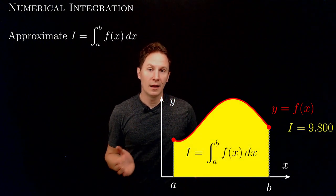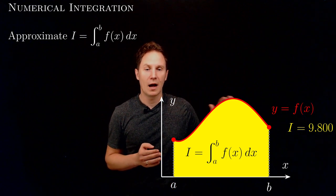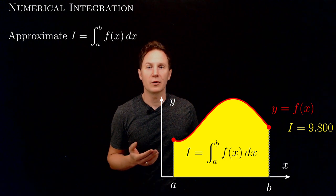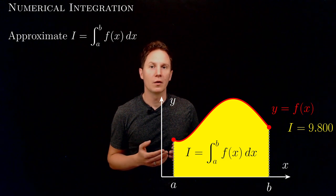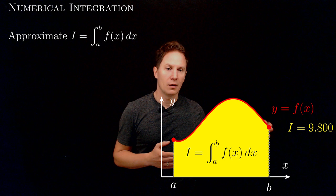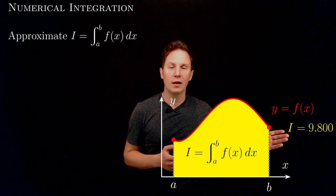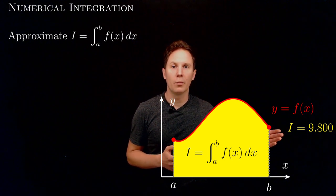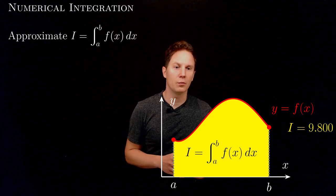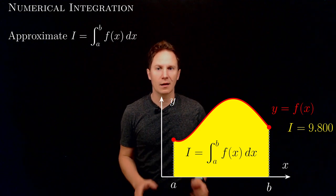In cases where we don't even have the graph of the function, only the values of the function at a discrete set of points, or we don't know the precise values at all, the whole point is to approximate this value, which here happens to be 9.8 exactly.